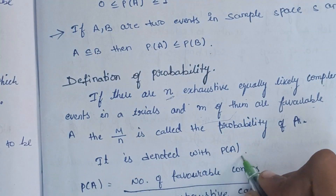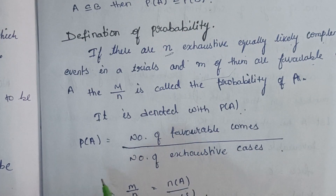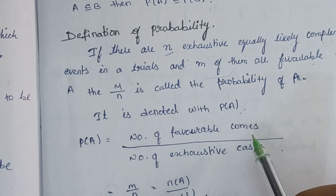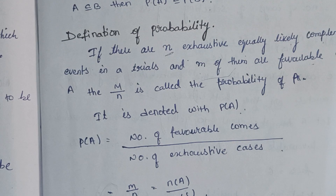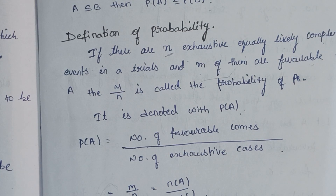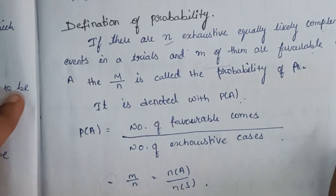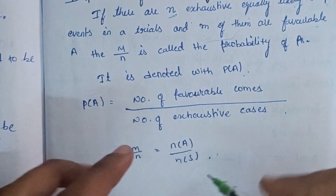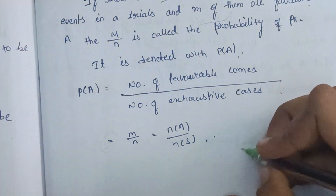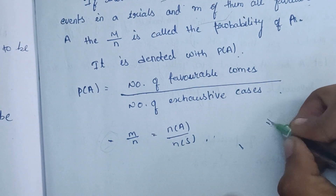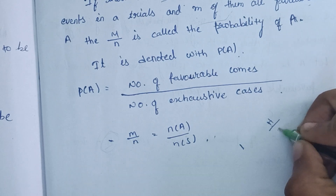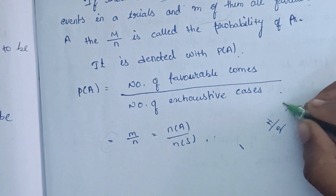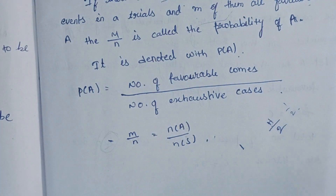P(A) is equal to the number of favorable outcomes divided by the number of total outcomes.